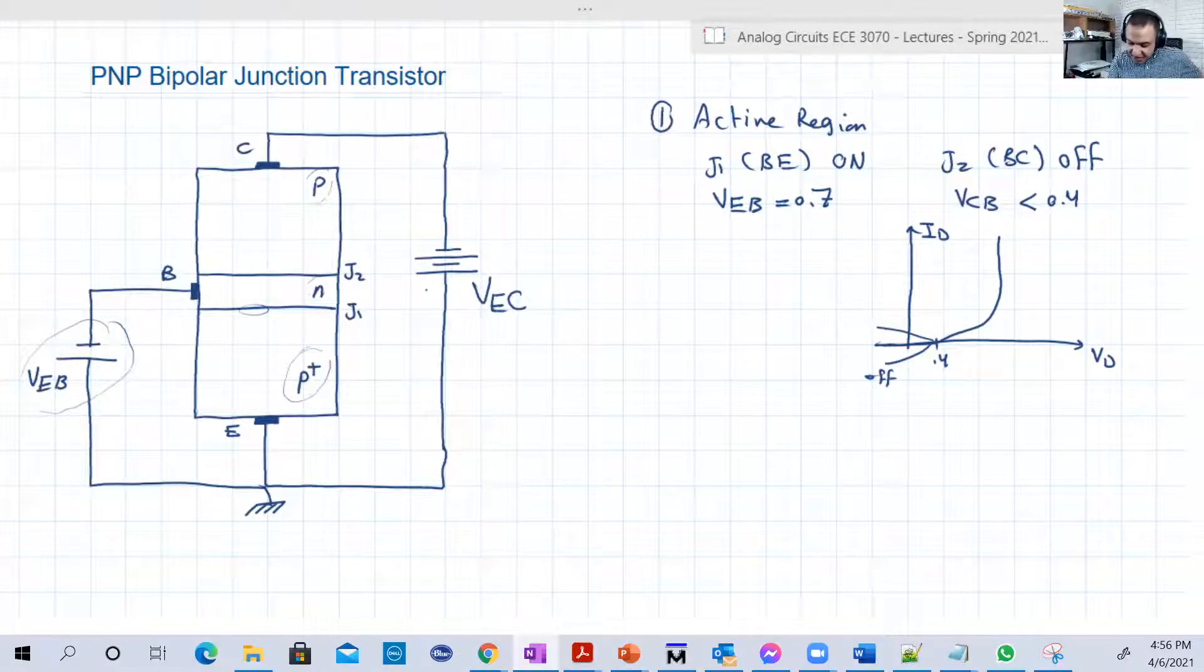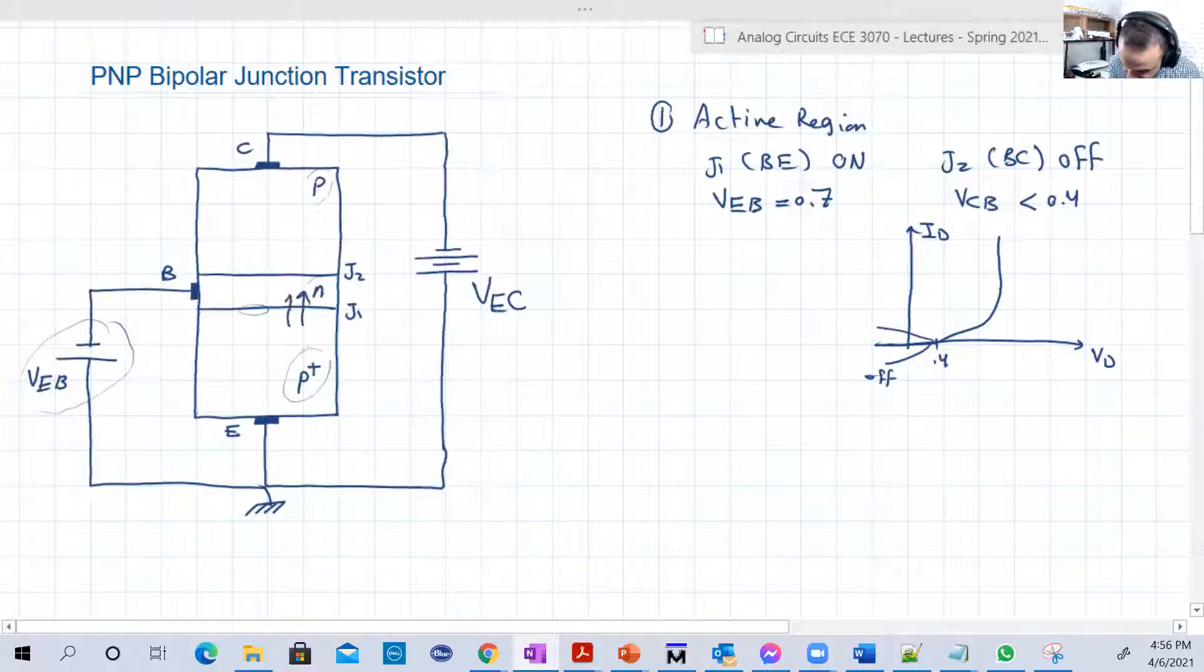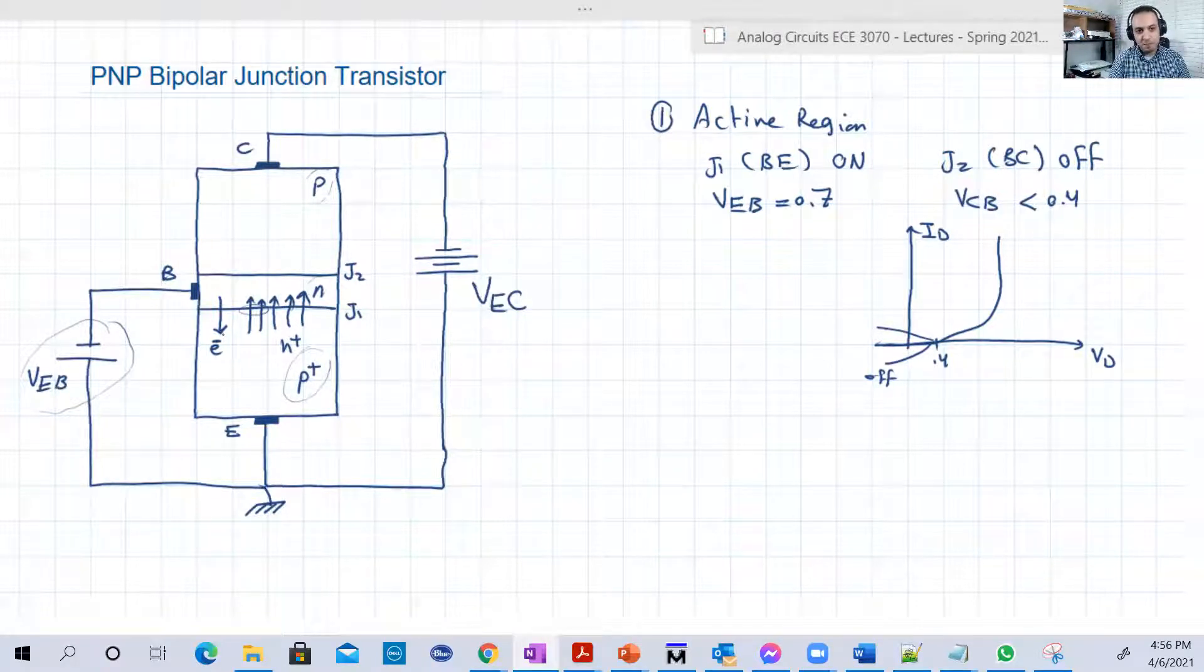How about the current? Again, since there is an on junction between the base and the emitter, there will be a flow of holes this time from the emitter to the base. And there are little electrons from the base to the emitter. Again, why is this? Because the doping in the emitter is very high and also its volume is larger than the base. So it's larger in volume and also greater in number of current carriers. In this time, it's holes in the emitter and electrons in the base.